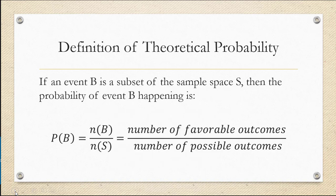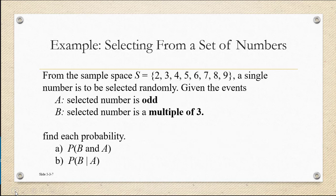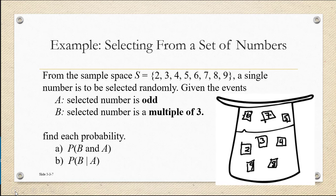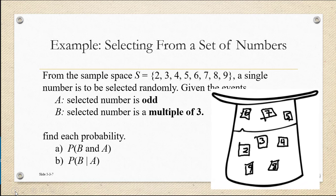For the next example, we're going to use the theoretical definition of probability, which is basically dividing the number of favorable outcomes by the total number of possible outcomes. This is the kind of probability where you haven't actually observed the event, but you're assuming equally likely outcomes. This applies here because we're randomly selecting from a sample space of numbers — imagine writing them on slips of paper and putting them into a hat and drawing one at random. The numbers are 2, 3, 4, 5, 6, 7, 8, and 9.